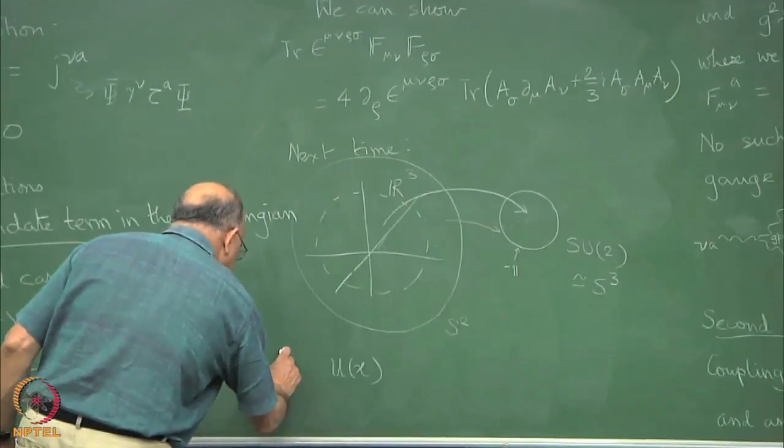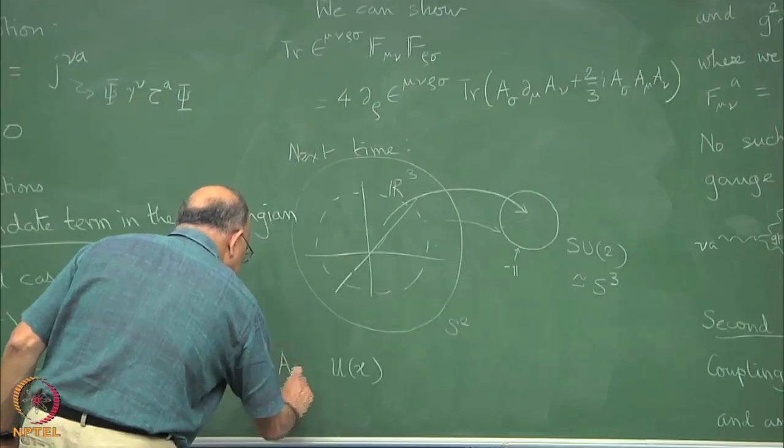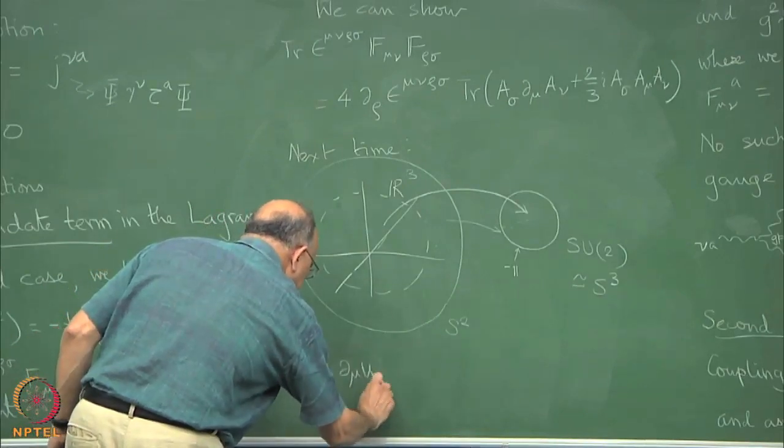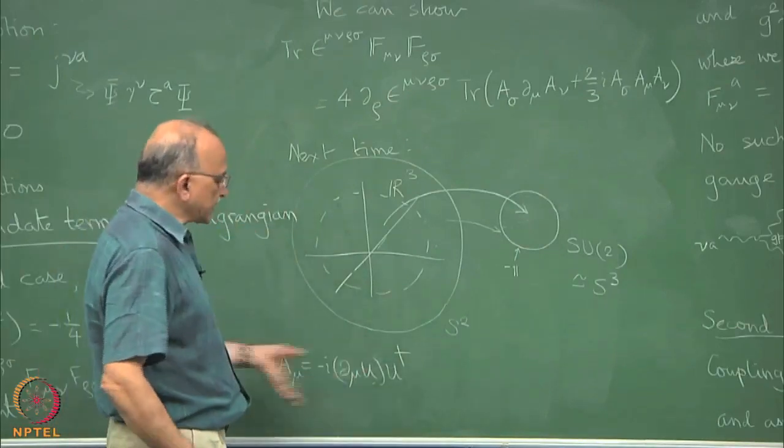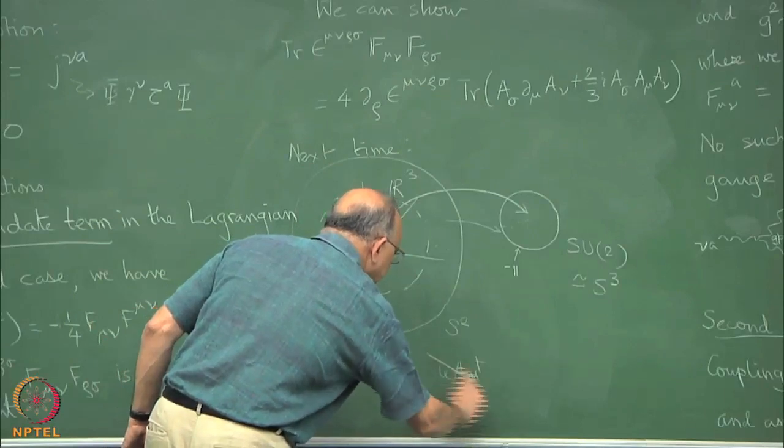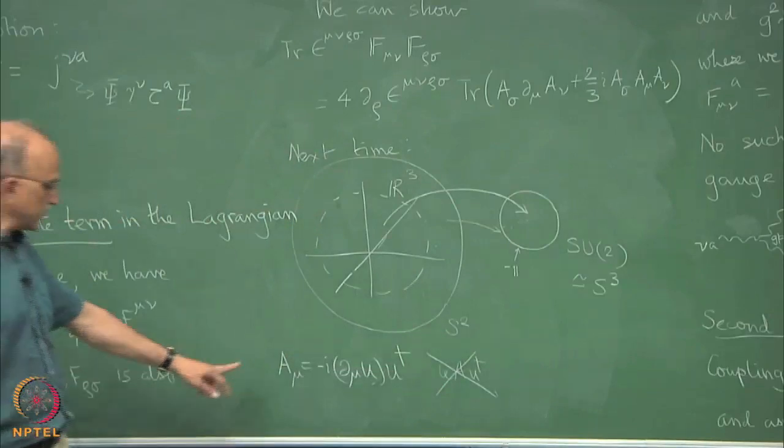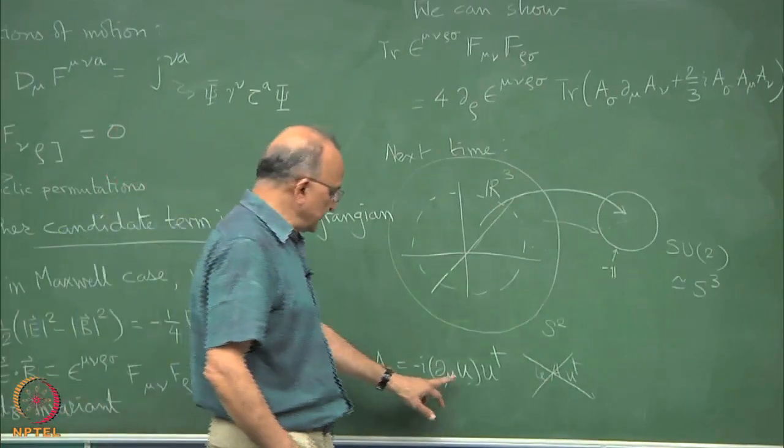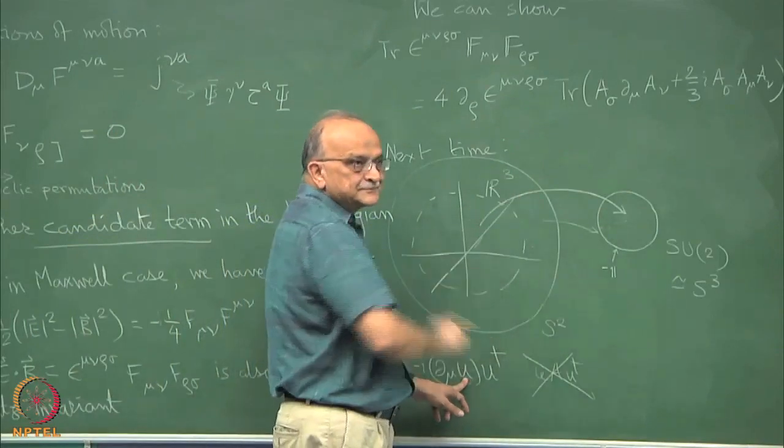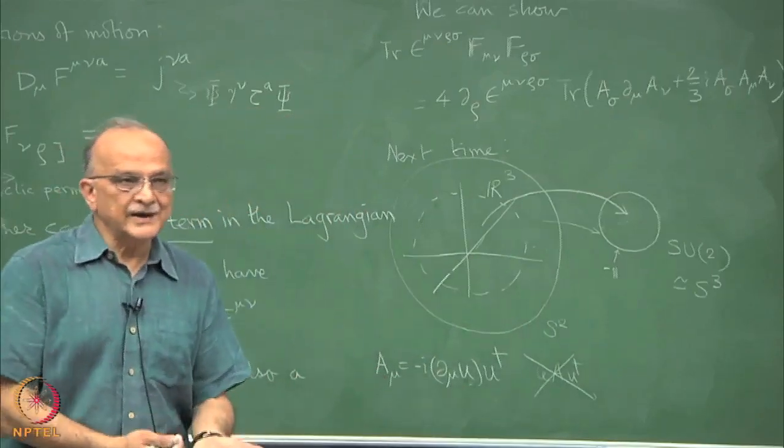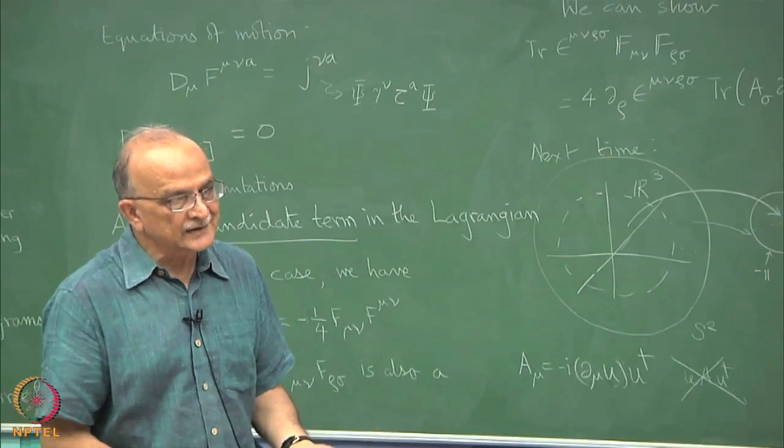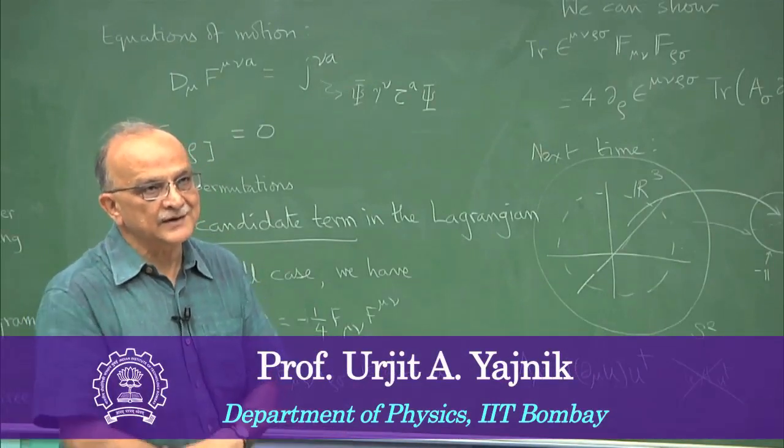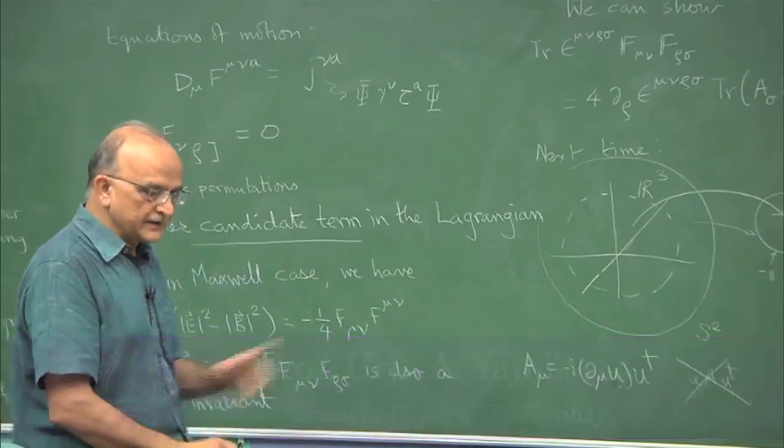Because of that fact, even if you give me a pure gauge field A mu which is simply equal to minus i d mu u u dagger, this is a pure gauge field because the u A u part is 0, you did not start with any gauge field to begin with. Suppose you construct a gauge field that is entirely of this form, it is a gauge transform of nothing. But this u could be a non-trivial map. In that case, you are stuck with a non-trivial A mu which although it is pure gauge, it has no physical field strengths. It is not identical to the vacuum you started with earlier. This kind of things arise in gauge fields which we will do next time.